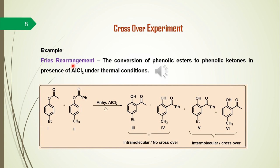Consider the best example of a crossover experiment — the Fries rearrangement. The Fries rearrangement is the conversion of phenolic esters to phenolic ketones in the presence of a Lewis acid or Brønsted acid, for example anhydrous AlCl3 under thermal conditions. Consider two molecules where the acetyl group is a migrating group in one and another keto group is the migrating group in the other. Subjecting these two substrates to anhydrous AlCl3 under Fries rearrangement conditions gives four different types of products.